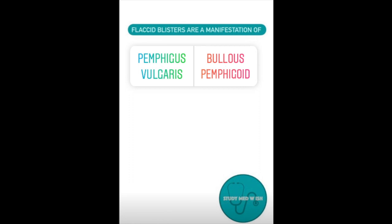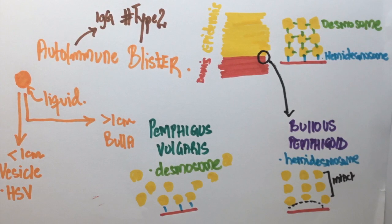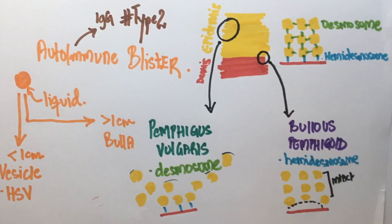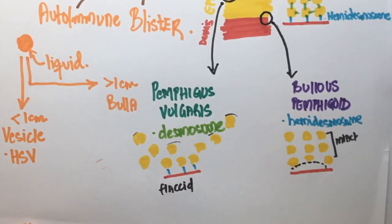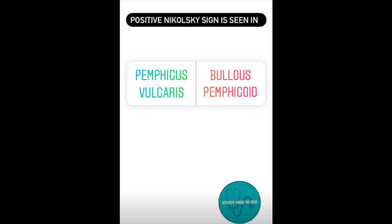Question three: flaccid blisters are usually seen in which condition? Bullous pemphigoid has a defect in the lower layer, but all the layers on top are pretty intact, so it is very hard for the blister to rupture. In pemphigus vulgaris, the superficial layers are involved, so there is a very thin wall to the blister — making it very easy to rupture. The answer is pemphigus vulgaris.